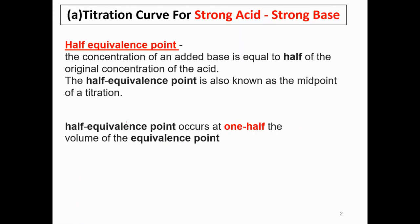For the half-equivalence point, it is the concentration of an added base equals to half of the original concentration of the acid. The half-equivalence point is also known as the midpoint of titration, and it occurs at one-half of the volume of the equivalence point.